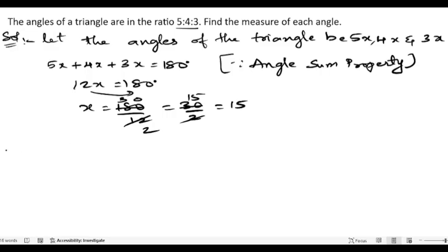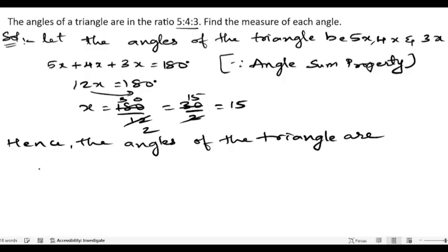Hence, the angles of the triangle are: first angle is 5x, so 5x equals 5 into 15, which is 75 degrees. Next, the second angle is 4x.